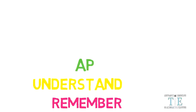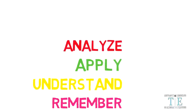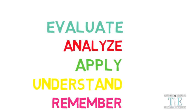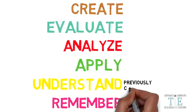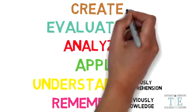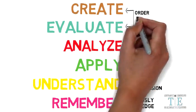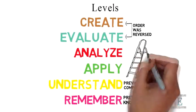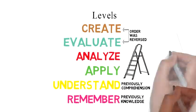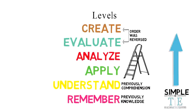The levels of Bloom's Taxonomy, from lowest to highest cognitive rigor, are: remember, understand, apply, analyze, evaluate, and create. Note that 'remember' was previously called 'knowledge,' 'understand' was called 'comprehension,' and the order of 'create' and 'evaluate' were switched in the revision. Bloom's Taxonomy is a hierarchy where students must first master lower levels before mastering higher levels.